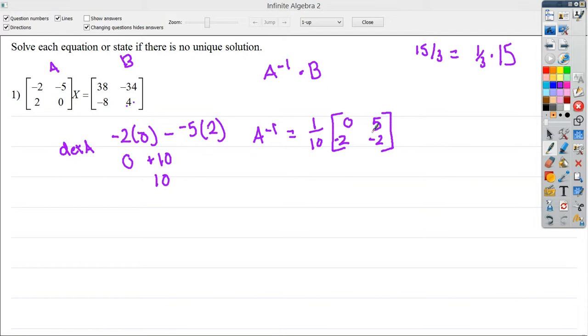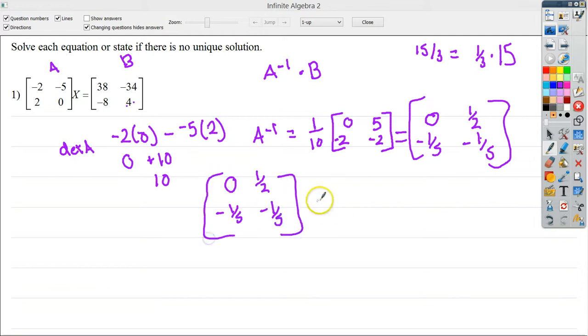Now I can use the inverse to get the correct answer. Multiplication is not commutative. You can't switch the order, so make sure you put your inverse in front. But first we need to figure out what it is. So 0 times one tenth is 0, five tenths is one half, negative two tenths is negative one fifth, and finally, negative one fifth again. So now that I have my full inverse, I can get to my answer.